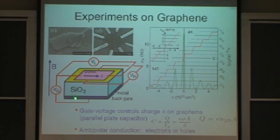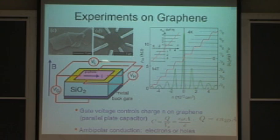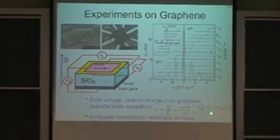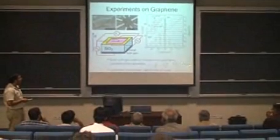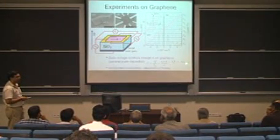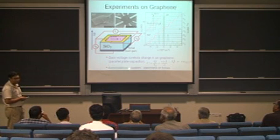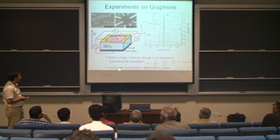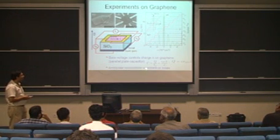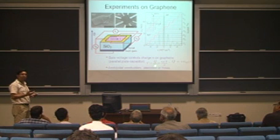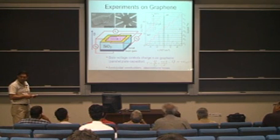You can apply a gate voltage to a metal gate and tune the number density in graphene. Gate voltage controls charge on graphene — you can think of this as a capacitor. The charge on the graphene sheet can be tuned by applying the gate voltage, which essentially changes the number density on the graphene sheet and in turn the charge on it. Another important fact is that the system has ambipolar conduction, meaning that electrons and holes both contribute to conduction depending on what gate voltage you apply.